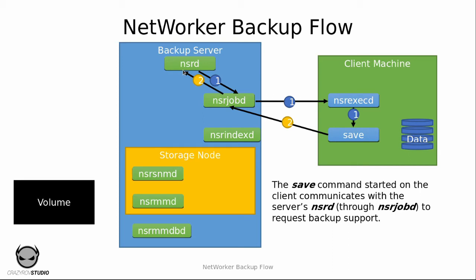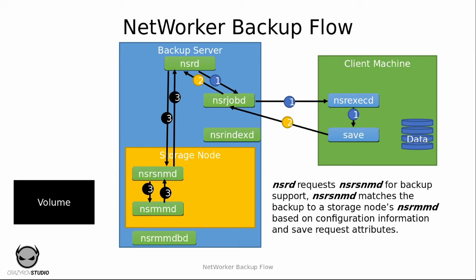Once save is initiated, it communicates back to the NSR jobd, which in turn communicates this information as a request to the NSRD, asking it to support the backup that it is going to initiate. This is all indicated by the arrow with the numerical two on it.